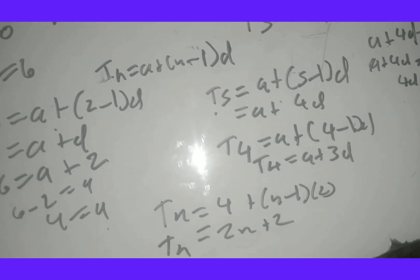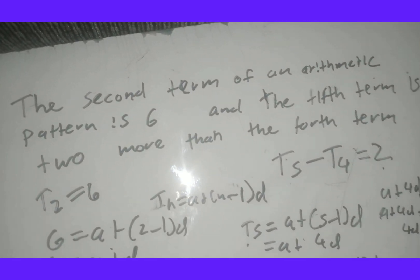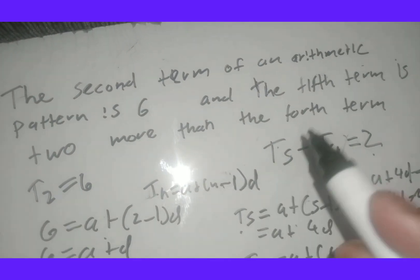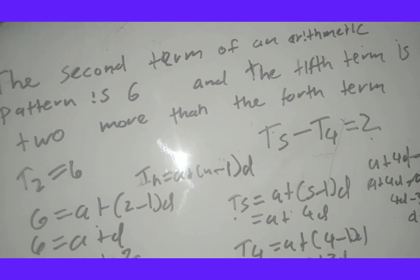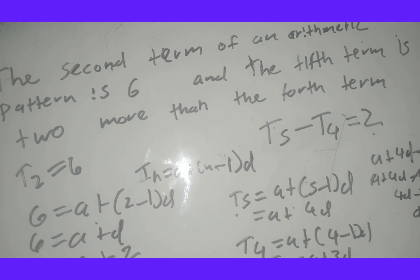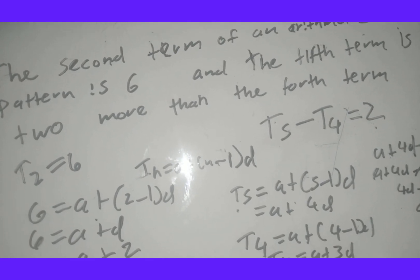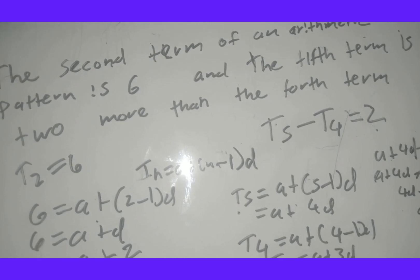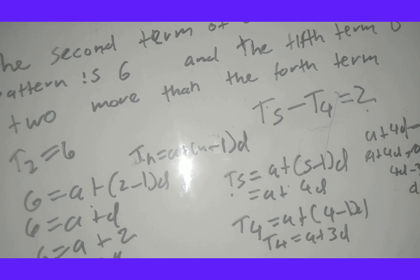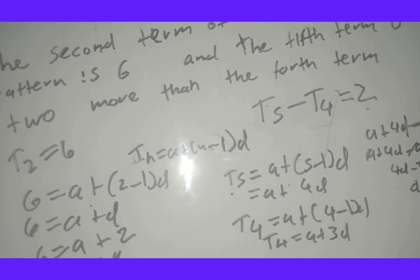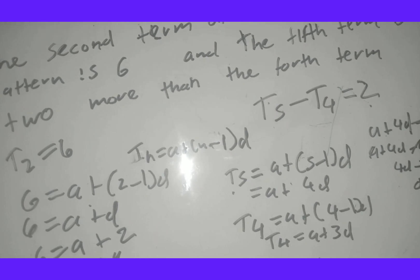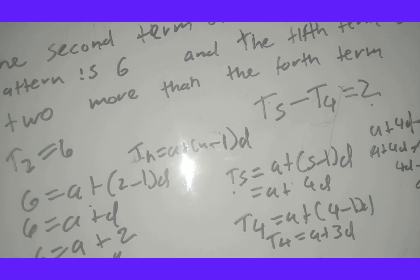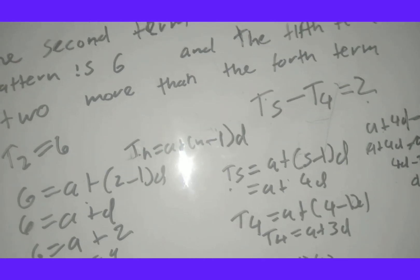Remember how to translate: if the second term is something, you know what to do. If the fifth term is 2 more than the fourth, it means t5 minus t4 equals 2. If the third term is 10 more than the second, it means t3 minus t2 equals 10. If they say the sum of the fifth and seventh term is 2, it means t5 plus t7 equals 2 — sum means addition.